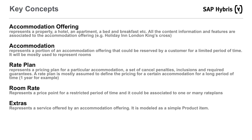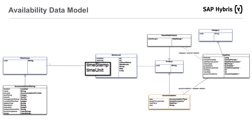An accommodation offering may represent a bookable property like a hotel, made of one or many accommodation rooms. A rate plan is one of many possible pricing options associated to the accommodation, made of one or many room rates that represent a price point for a specific night or set of nights. Extras can be sold alongside an accommodation and they are standard hybrid products.